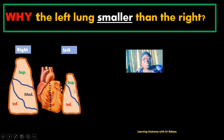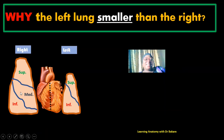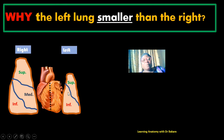The number of lobes in the two lungs are different. We have three on the right and two on the left. This is the reason why the left lung is smaller than what is seen on the right.